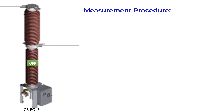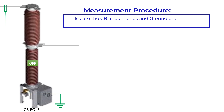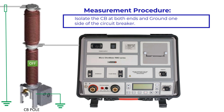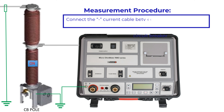This is a circuit breaker pole of which contact resistance is to be measured. First, isolate the circuit breaker at both ends and ground one side of the circuit breaker. Ground the micro-ohm meter. Then close the circuit breaker. Connect the negative current cable between the instrument and the grounded side of the circuit breaker.